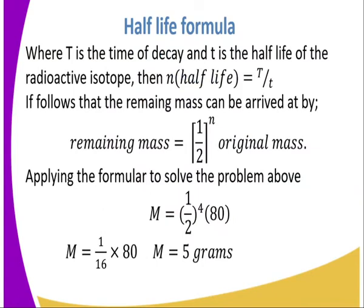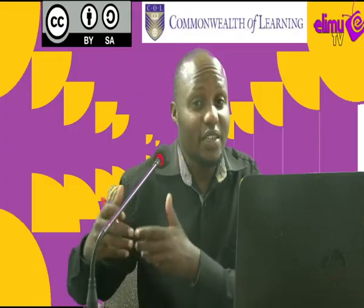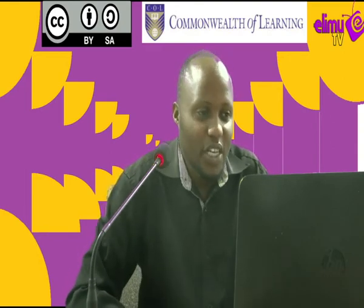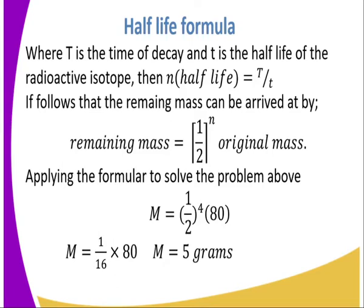If we had more than 100 days this step-by-step process could become very tedious. Therefore, we use the half-life formula: n = T / t, where T is the total time of decay and t is the half-life of the radioactive isotope. This gives us n, the number of half-lives. It follows that the remaining mass can also be found using the half-life formula.